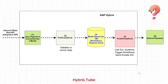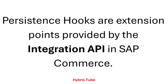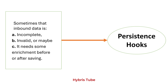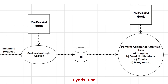In this video I will explain step by step how this works — how you can implement a pre-persist hook and a post-persist hook in your projects. So what are persistence hooks in SAP Hybris? Persistence hooks are extension points provided by the integration API in SAP Commerce. Whenever we send inbound data to Hybris — for example from ERP, CRM, OMS, or any external system — the integration API receives a JSON, converts it into a model, and persists it into the database. Sometimes that inbound data is incomplete, invalid, or needs enrichment before or after saving, and that's where persistence hooks come in.